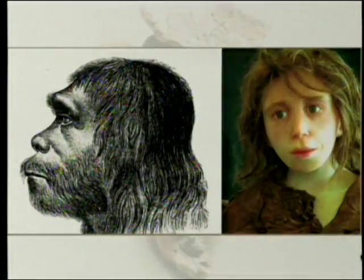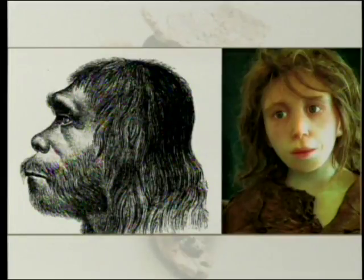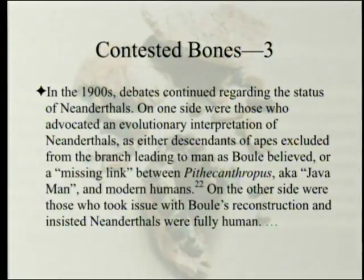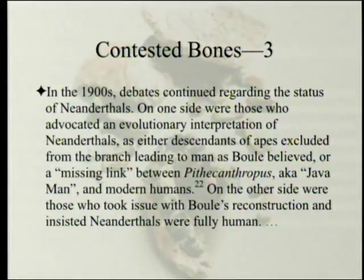Here is the old depiction and the new. There are some similarities, but the new one could easily pass for human. In the 1900s, debates continued about the status of Neanderthals. On one side were those who advocated an evolutionary interpretation — either as descendants of apes excluded from the branch leading to man, as Boule believed, or as a missing link between Pithecanthropus (Java Man) and modern humans. On the other side were those who insisted Neanderthals were fully human.